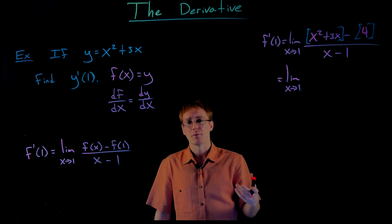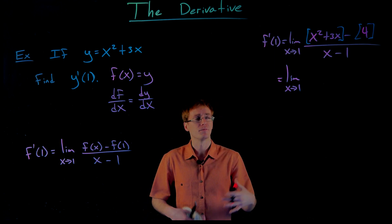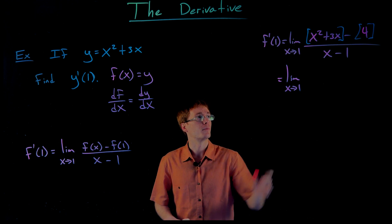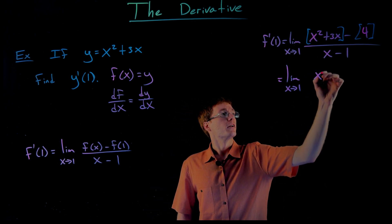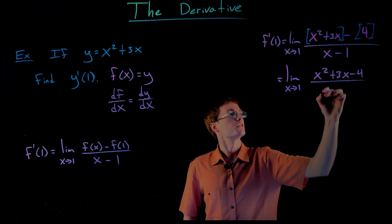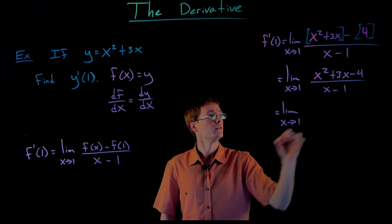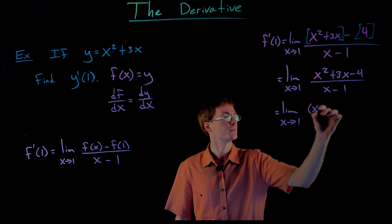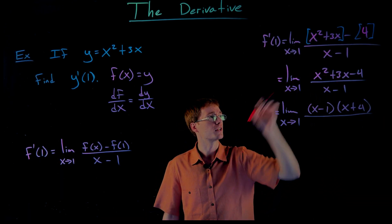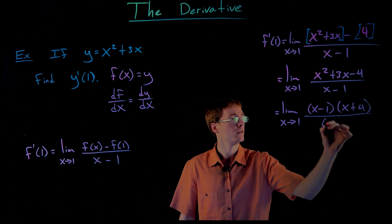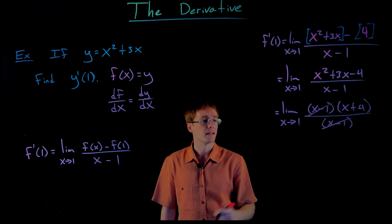If we try to plug in x equals 1, we get the indeterminate form 0 over 0. We've seen how to resolve these limits — we use the equivalent functions theorem: do some factoring and cancel a common factor. The common factor we need to cancel should be x minus 1. So our numerator, written all together, is x squared plus 3x minus 4, and our denominator is x minus 1. We factor x squared plus 3x minus 4 as x minus 1 times x plus 4. We can see that x minus 1 in the denominator is canceled by the x minus 1 factor in the numerator.